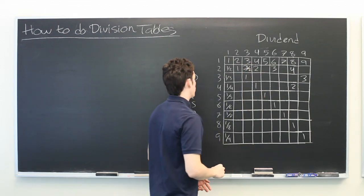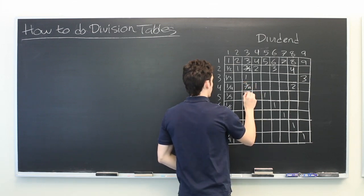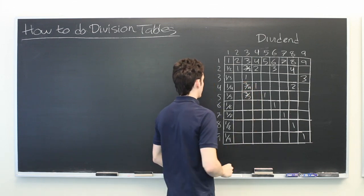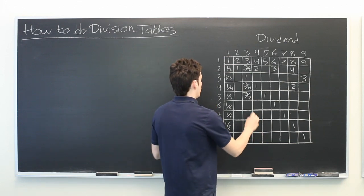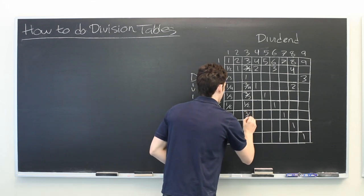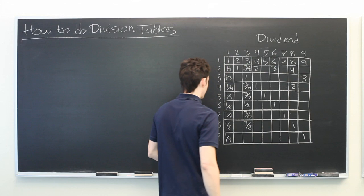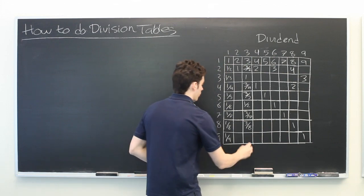Three divided by two will not reduce at all. Three-fourths, three-fifths. But three over six can reduce to one-half. Three-sevenths, three-eighths, and three over nine can reduce to one-third.